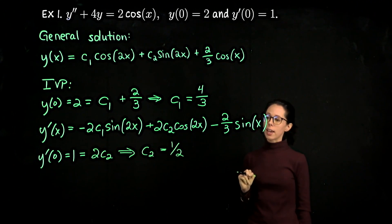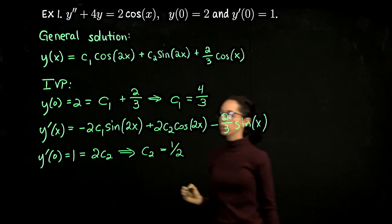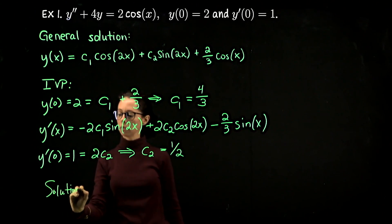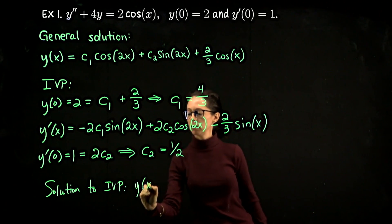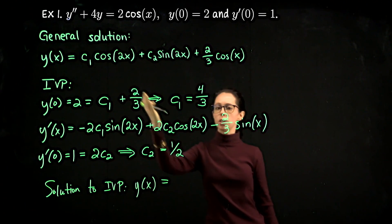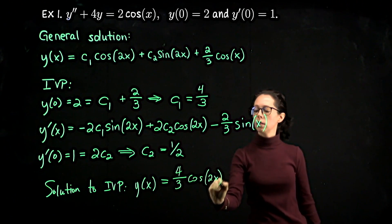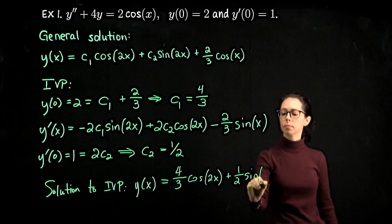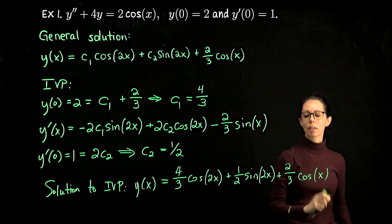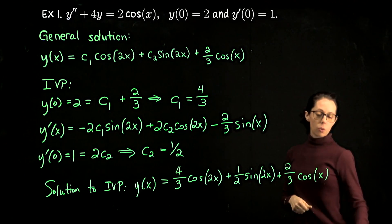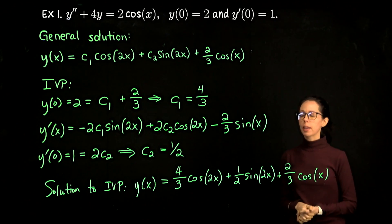That's it. Now we can write down the specific solution that satisfies the differential equation with these initial conditions. Here's the solution to the initial value problem: y of x equals four-thirds cosine of 2x plus one-half sine of 2x plus two-thirds cosine of x. When you've solved an initial value problem, you shouldn't have any constants left — we've solved for c1 and c2.